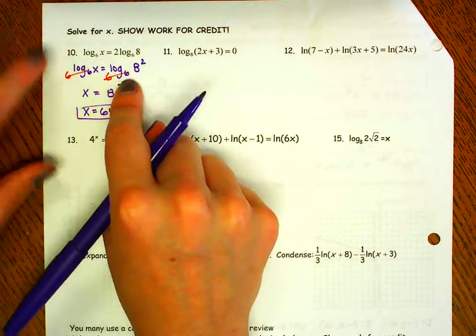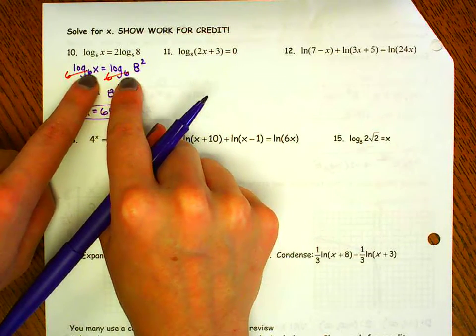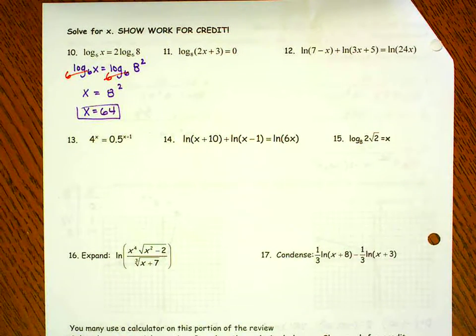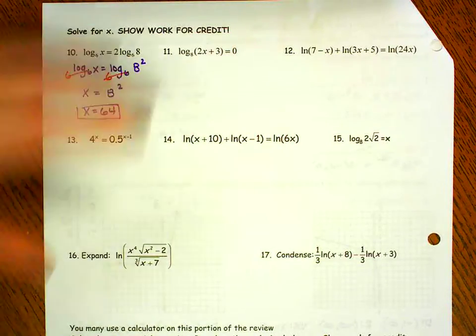Really what you're just doing is once you've got the same log base something with nothing in front, their arguments have to be the same in order for their values to be the same. Let's look at number 11.